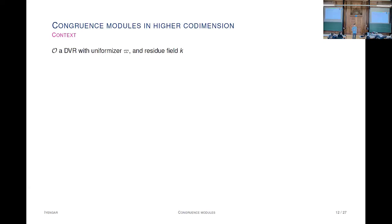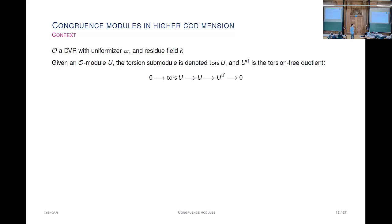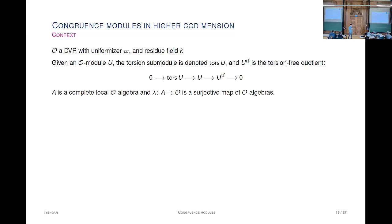The context is that we have a discrete valuation ring, DVR, and I'll fix a uniformizer pi, and K will be the residue field. At various points I'll have to look at the torsion-free quotient of an O-module—I'm going to use the notation that 'tors' stands for the torsion part and the torsion-free quotient is denoted with the subscript TF. I'm switching from R to A because you're applying the construction of the congruence module not just to the deformation ring but maybe also to the Hecke algebra itself.